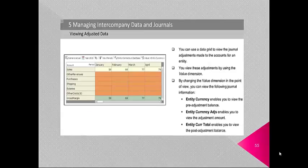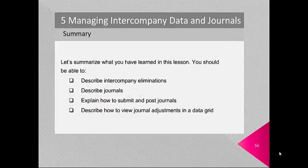You can use the data grid to view journal adjustments made to accounts for an entity, using the value dimension. By changing the value dimension in the point of view, you can view: Entity Currency (pre-adjustment balance), Entity Currency Adjustments (the adjustment amount), and Entity Currency Total (post-adjustment balance). To summarize: describe intercompany transactions and how to eliminate them, describe journals and how to submit and post journals, and view journals in the data grid.